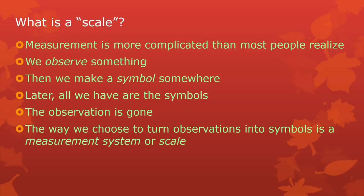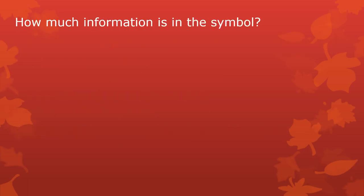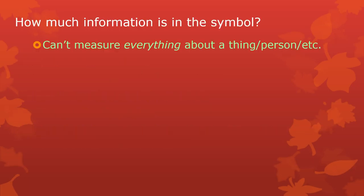The process of turning observations into symbols is measurement, and the specific choices you make in any given case are a measurement system or a scale. We're really concerned with how much information is in each scale, in each symbol.